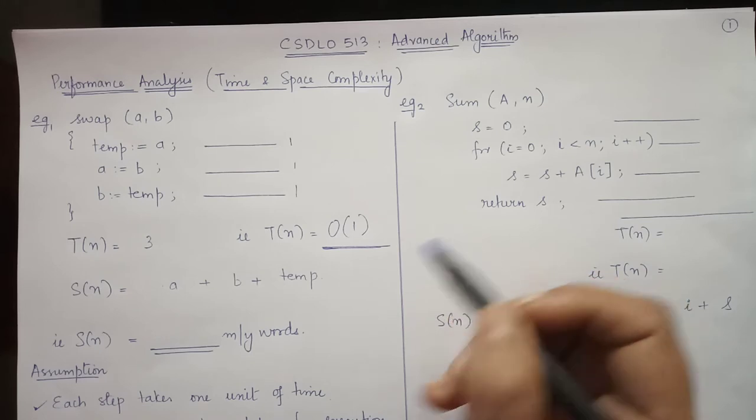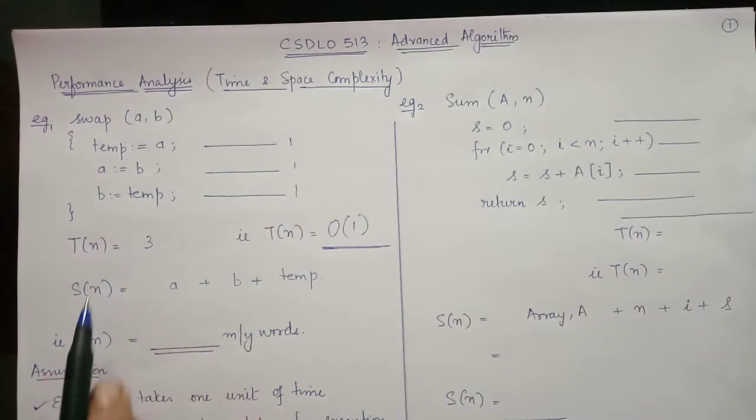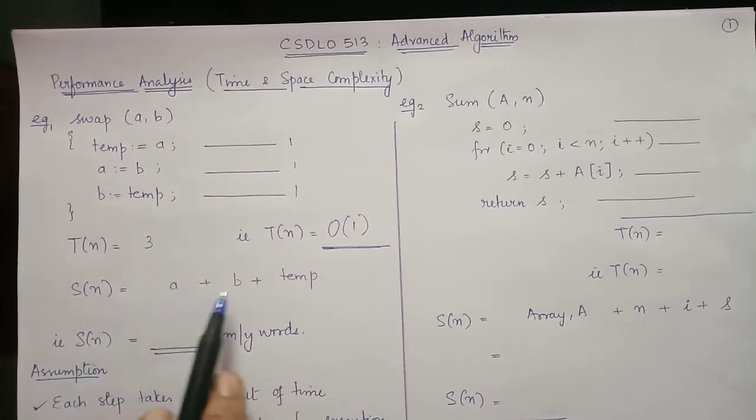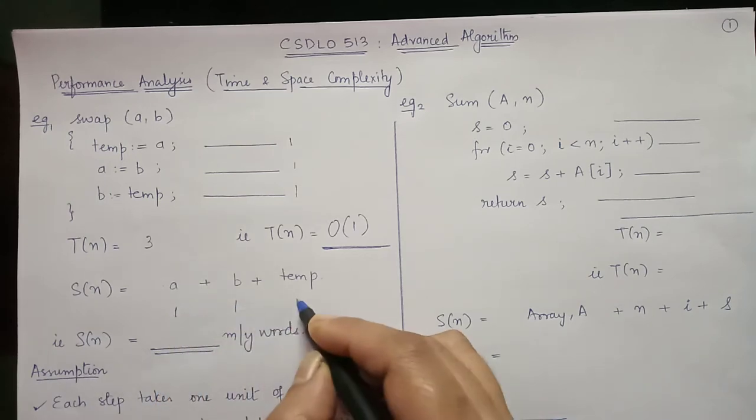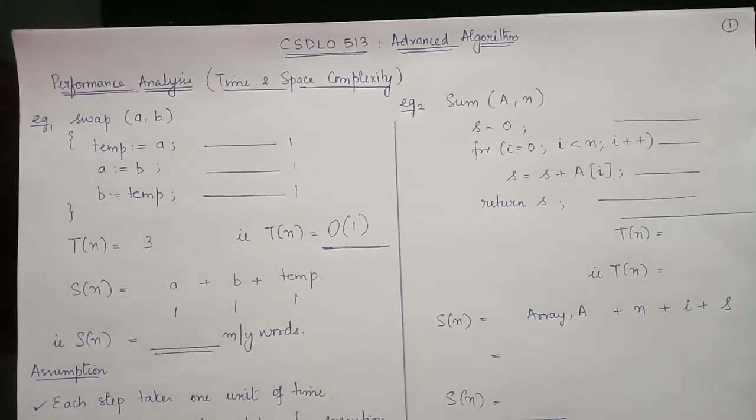Now coming to the space complexity of this code snippet, S of n. Since we have three variables a, b and temp, we will allocate one memory word for each of these variables. Hence S of n, that is the space complexity of this algorithm, is again three memory words.